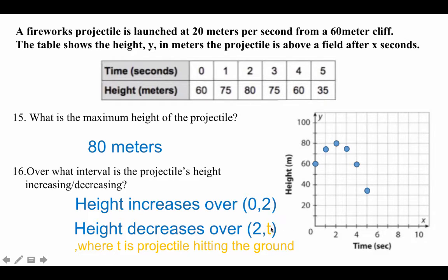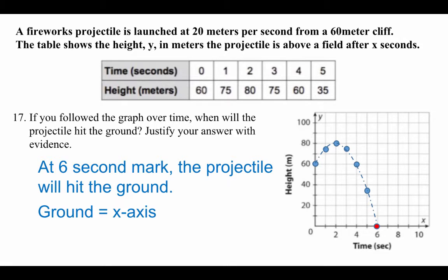It's decreasing from 2 to t. But we're not sure what that is. But since we already figured that out, we know it's 6. So t is when it will be decreasing until it hits the ground. I want to find the time in which the projectile hits the ground. Because we already figured that out, at 6 second mark, the projectile will hit the ground. The ground, in this case, is the x-axis.